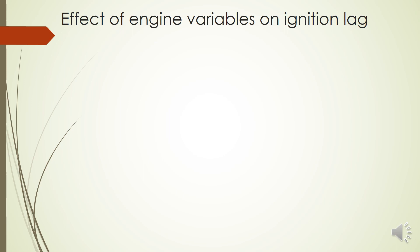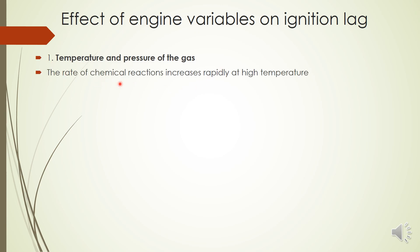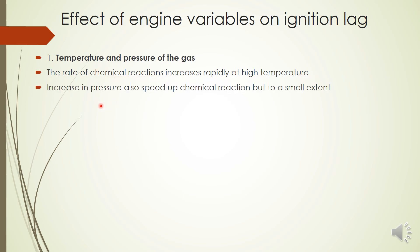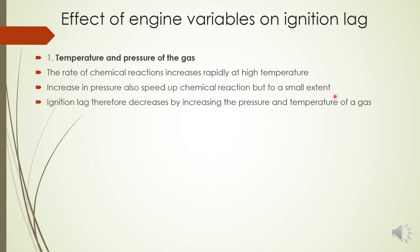Now let's look at the effect of engine variables on ignition lag. Regarding temperature and pressure: the rate of chemical reactions increases rapidly at high temperature, and increased pressure also speeds up chemical reactions to a smaller extent. Since ignition lag is a chemical stage, the time required decreases with increasing pressure and temperature, so ignition lag is reduced.